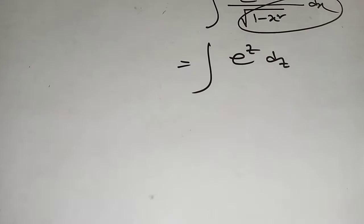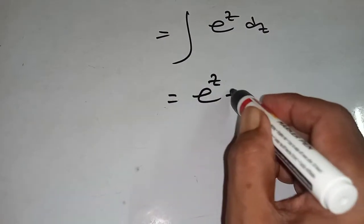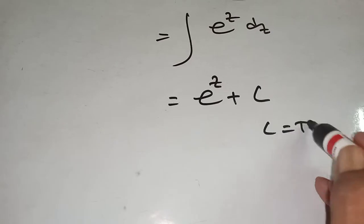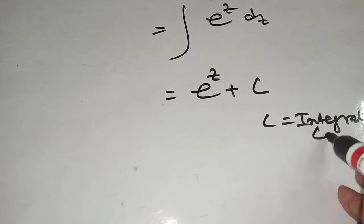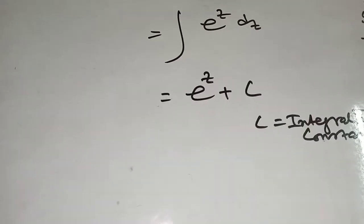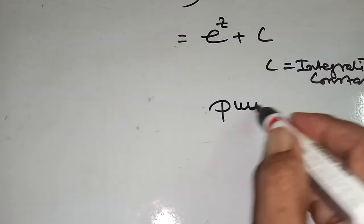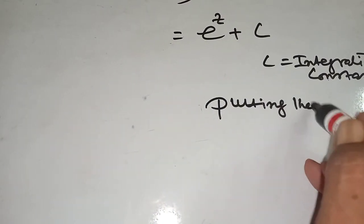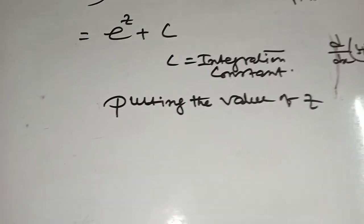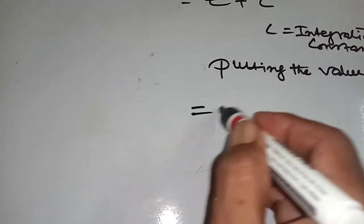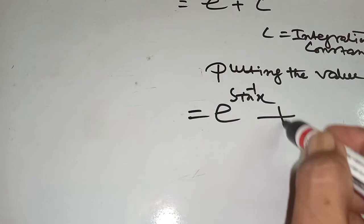Now, integration of e to the power z — the formula is e to the power z plus c. Here, c is the integration constant. Now, putting the value of z back, that means the answer is e to the power sine inverse x plus c.